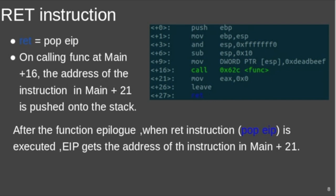So the next instruction of function epilogue is ret. Also, ret means pop EIP. So when the ret instruction is executed, the address at the top of the stack is popped from the stack to EIP. As a result, the next instruction would be the one in main plus 21. This is the basic idea in stack overflow: that is, to somehow override the return address so that we can cause an unintended behavior in the program that benefits us.